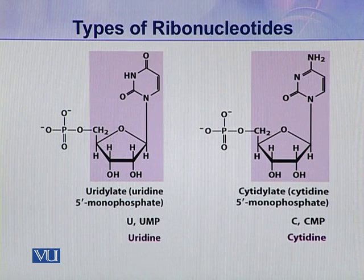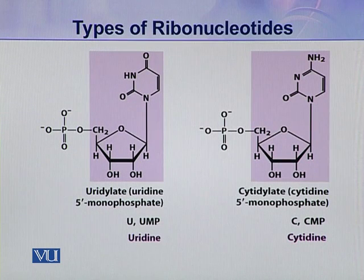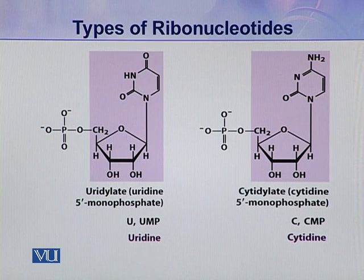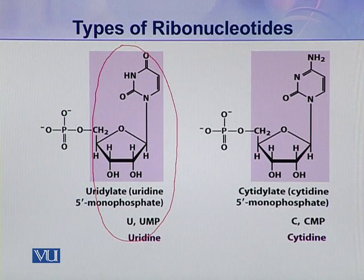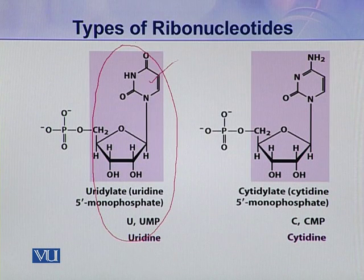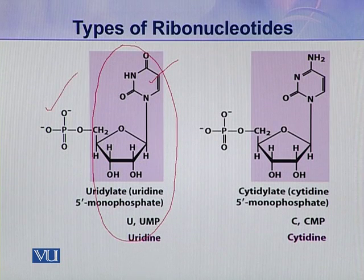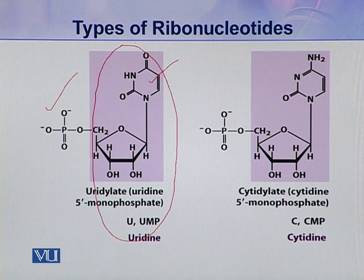Here are two other types of ribonucleotides. The coloured portion here is uridine because the nitrogenous base present here is uracil.